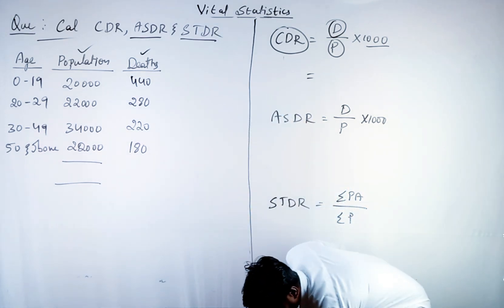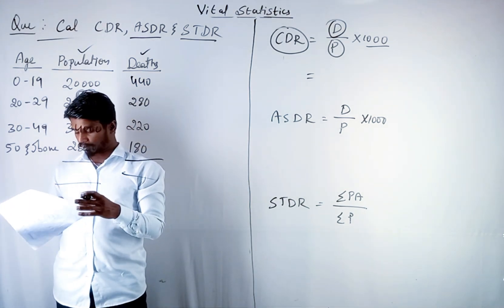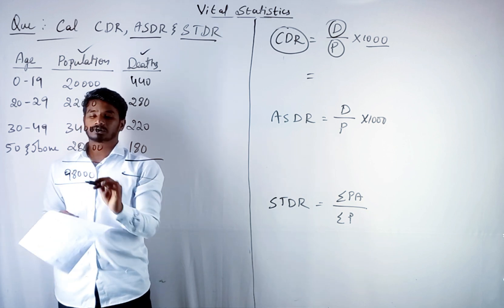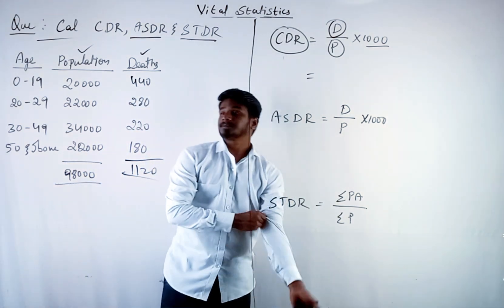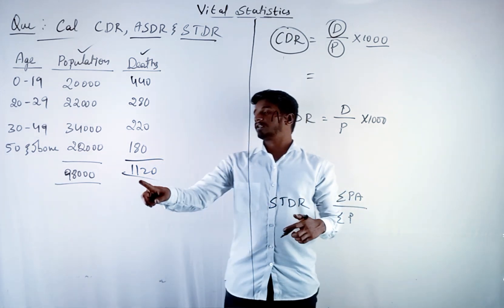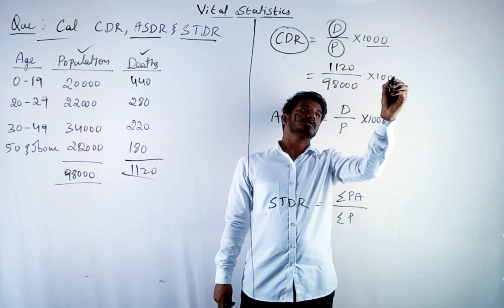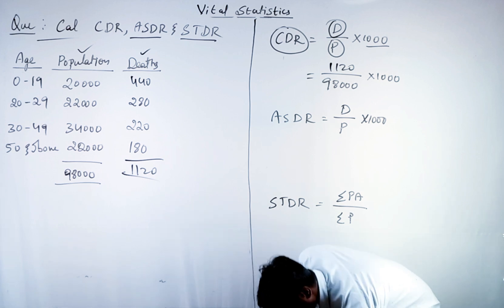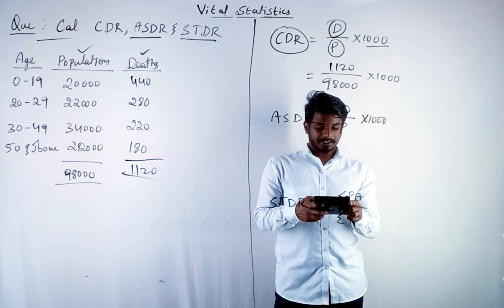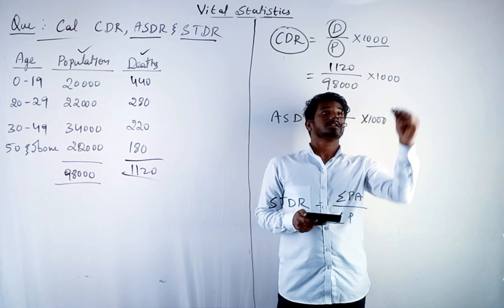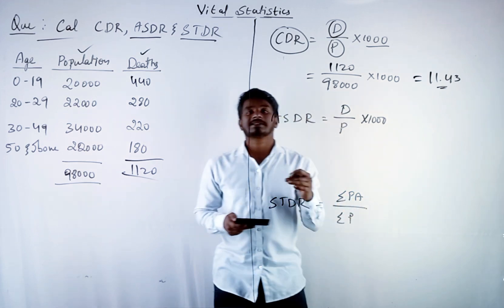Let me total it. I have already totaled it to save time. Population is 98,000 and total deaths are 1120. So we got death total 1120 divided by 98,000 into 1000 equals 11.43. This is your CDR.